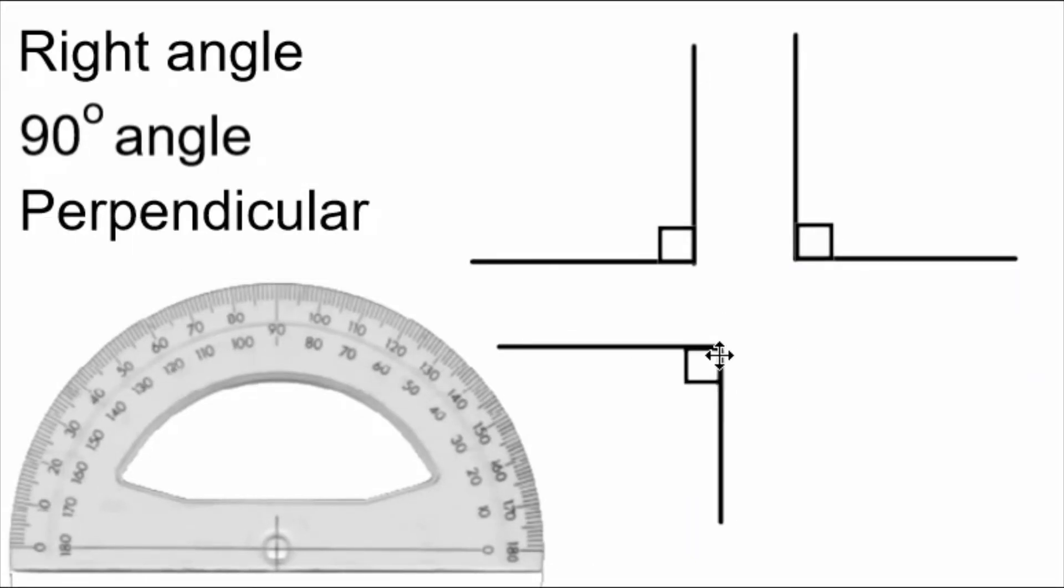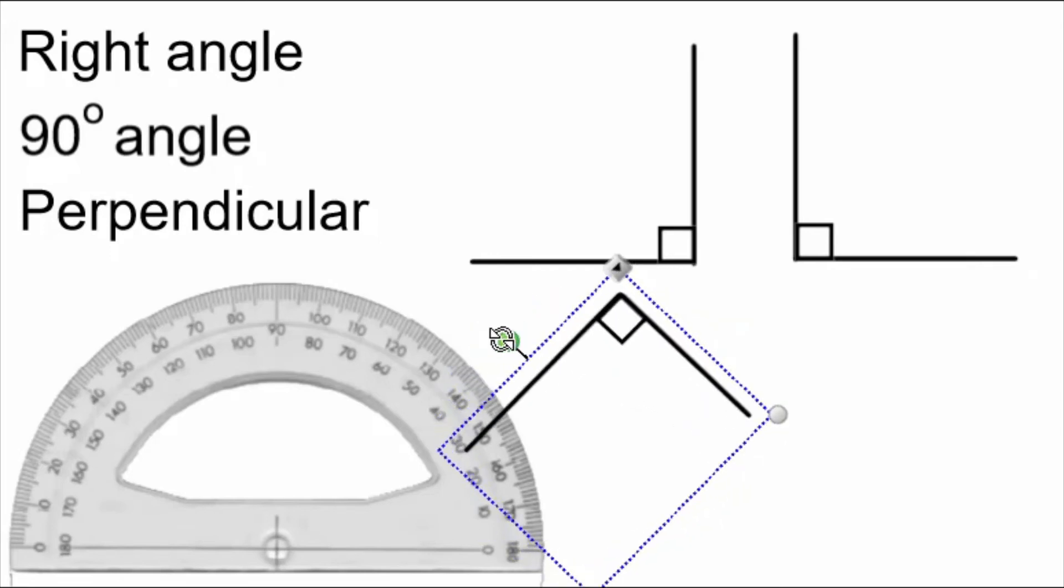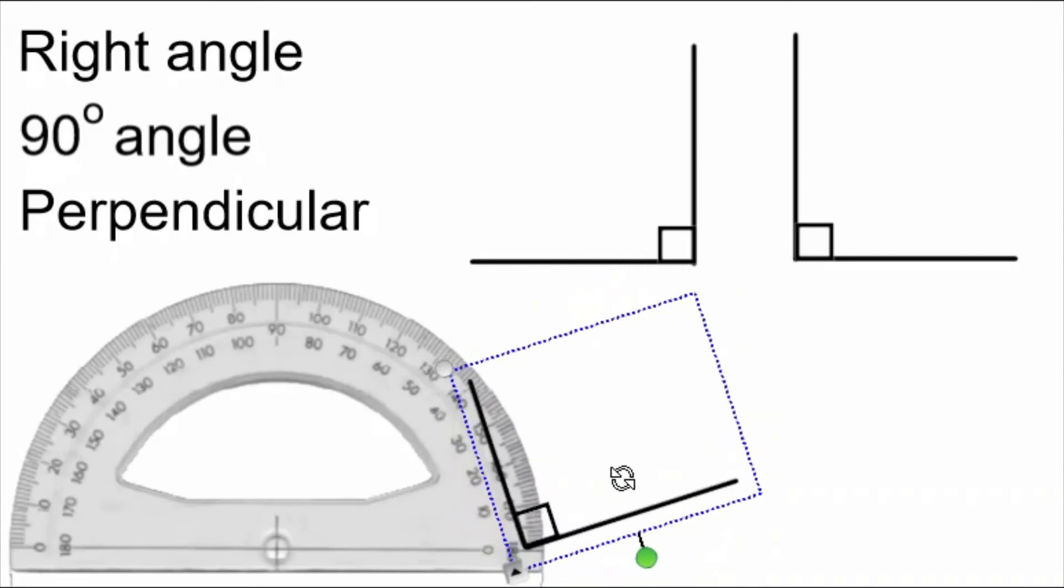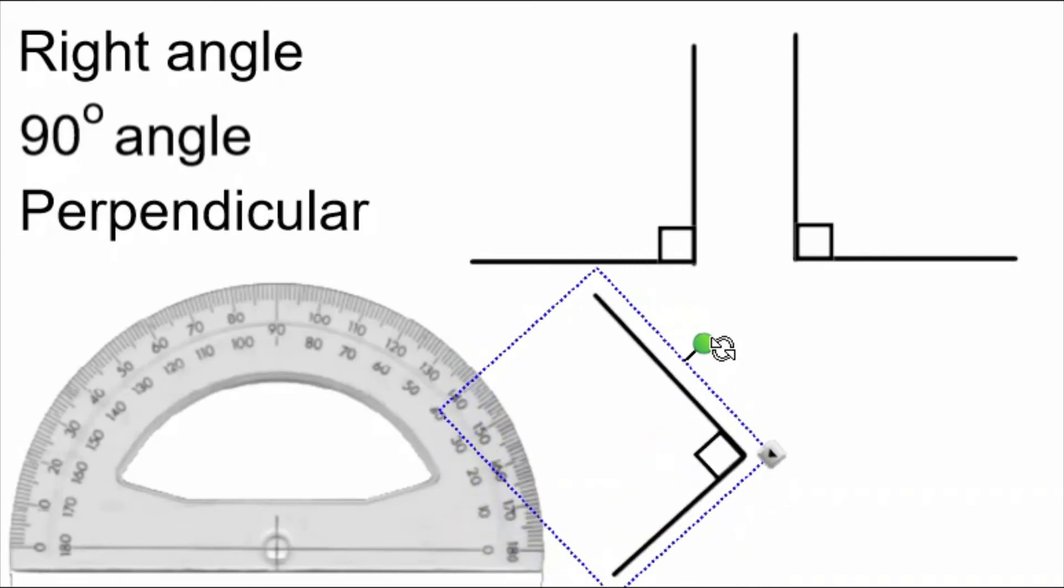A right angle doesn't have to have a line that is flat to the bottom of the page, like this one. It can be drawn below the line, and it can be twirled around so that it's pointing anywhere. All of these angles, no matter how I show them, are right angles. And we can tell that by the fact that the lines are perpendicular and by the label of the little square.